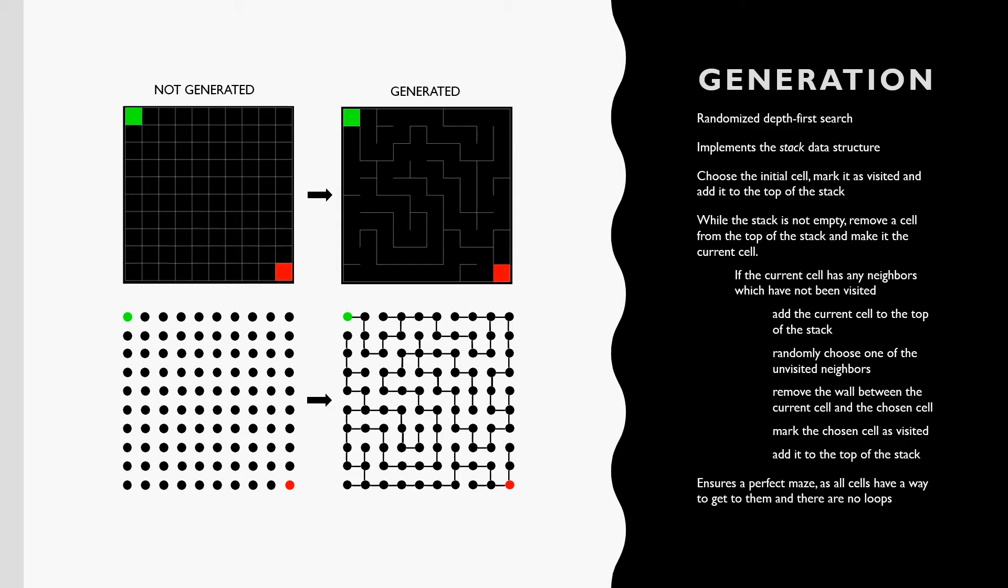If our current cell has any neighbors that have not been visited, we add the current cell back to the stack and randomly select one of its neighbors. We remove the wall between the two cells and mark the neighbor as visited before adding it to the stack.